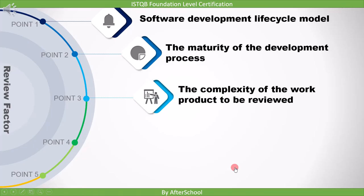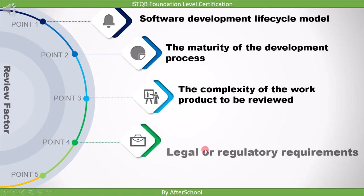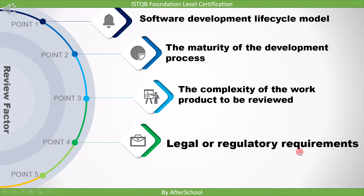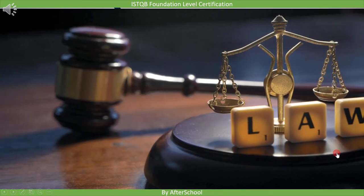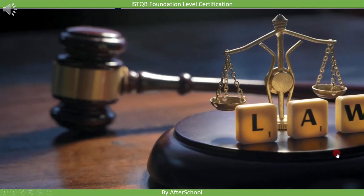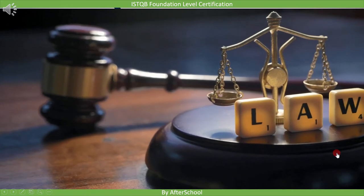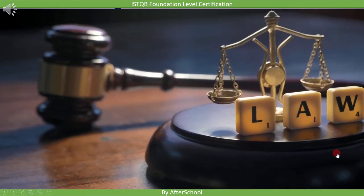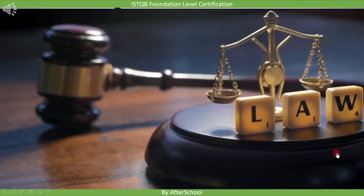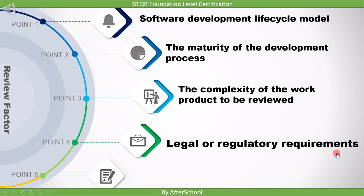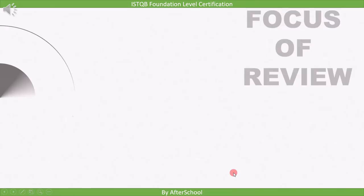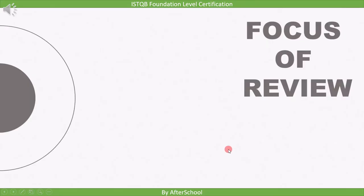The fourth point is legal or regulatory requirements. If the product needs to fulfill legal requirements, then in future you may have to show proof that you followed all the processes during development. To do that we have to go for formal review. The last point is for an audit trail. These are the five factors influencing review.